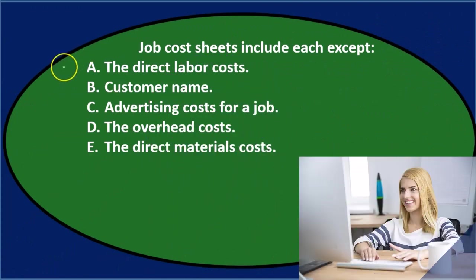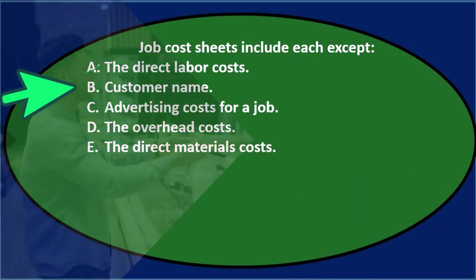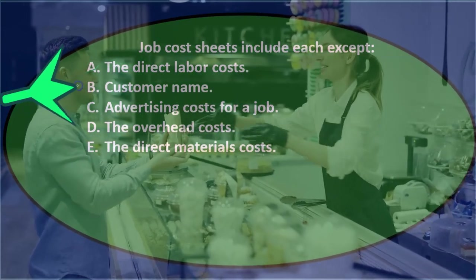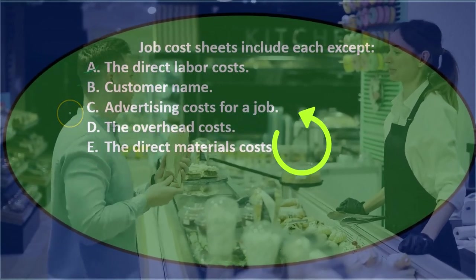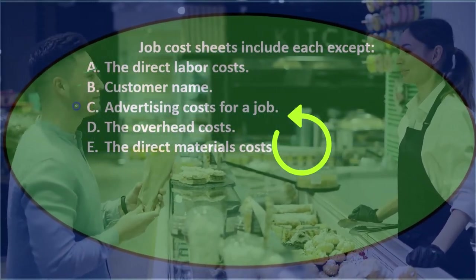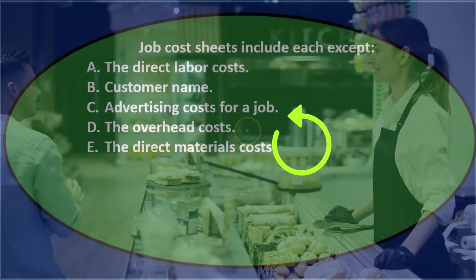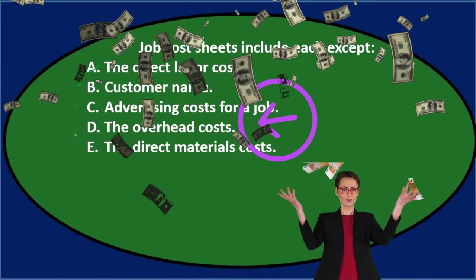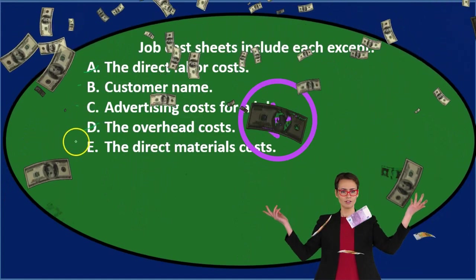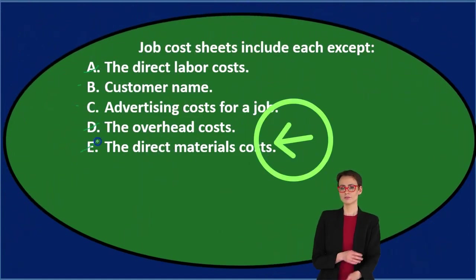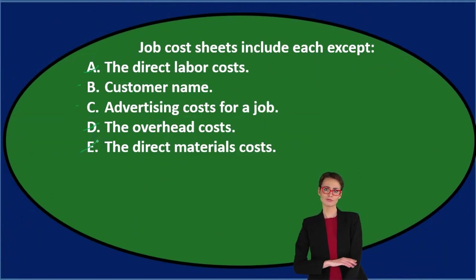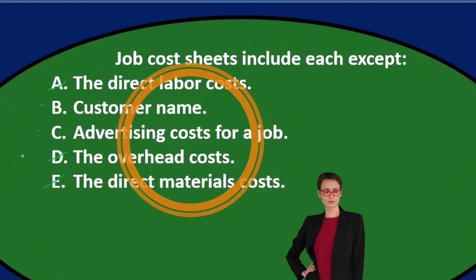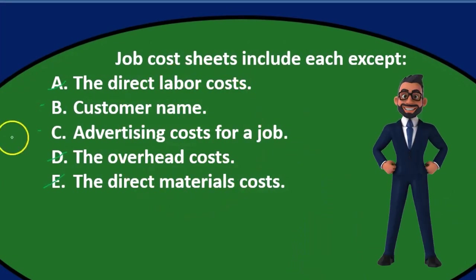Any inventory we make has three components: direct materials, direct labor, and overhead — so those are probably going to be on the job sheet. Direct labor costs are probably on the job sheet, so that's not the answer. Customer name — probably included, so we'll keep that for now. Advertising costs for a job — it's a kind of cost, so we'll keep that. Overhead costs — that would be on the job cost sheet. Direct materials costs — that sounds reasonable too. So we're left with B and C.